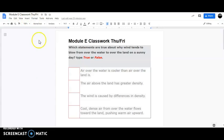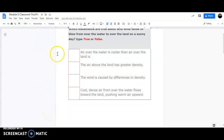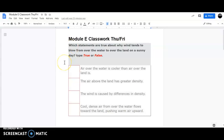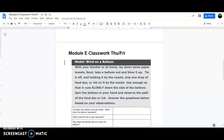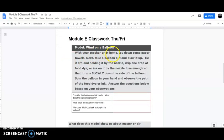Guys, I wanted to show you this in module classwork Thursday Friday. We're continuing here. Did you know that not only did we give you these sweet questions, but also we went ahead and gave you a lab. Check it. It's a model. It's a modeling lab. Boom. With your teacher or at home, lay down some paper towels. Next, take a balloon out and blow it up. Tie it off and hold it by the nozzle. Drip one drop of food dye or ink on it by the nozzle. Use enough so that it runs slowly down the side of the balloon. Spin the balloon in your hand and observe the path of the food dye or ink. Answer the questions below based on your observations.